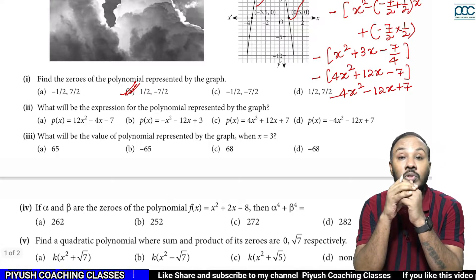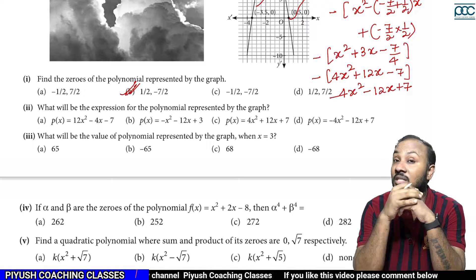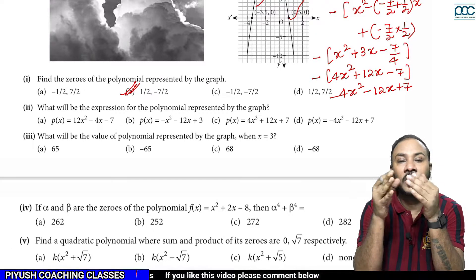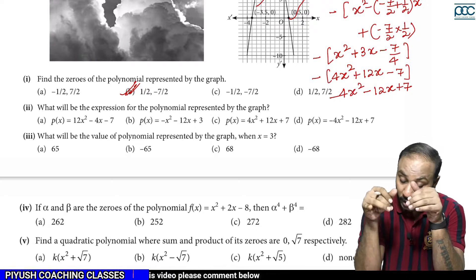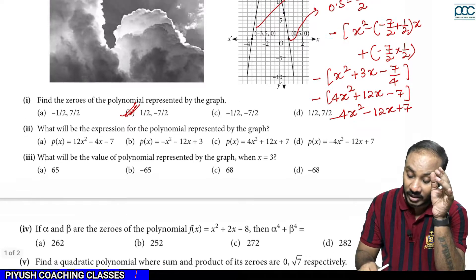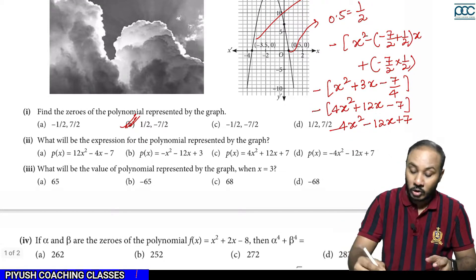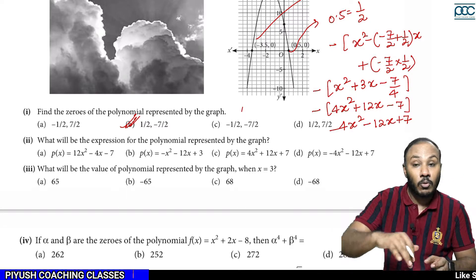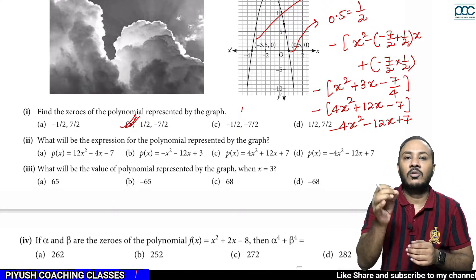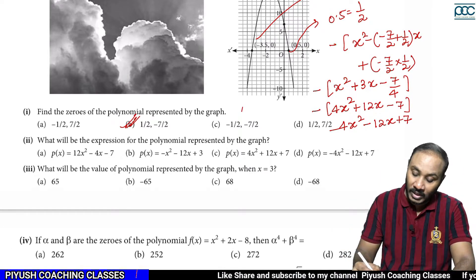So we arrive at 4x² − 12x + 7. We had 2 zeros: one was half, the other was minus 7 by 2. We calculated their sum and product and placed them in the equation. The minus sign is applied because the curve is inverted, so the leading coefficient becomes negative. Looking at the options, the answer is D.